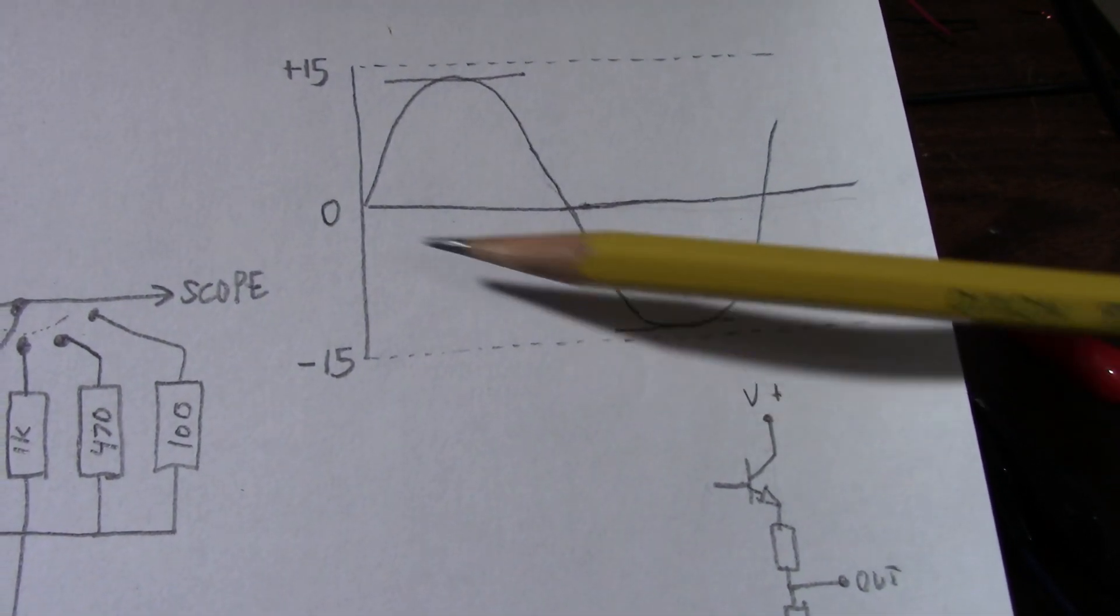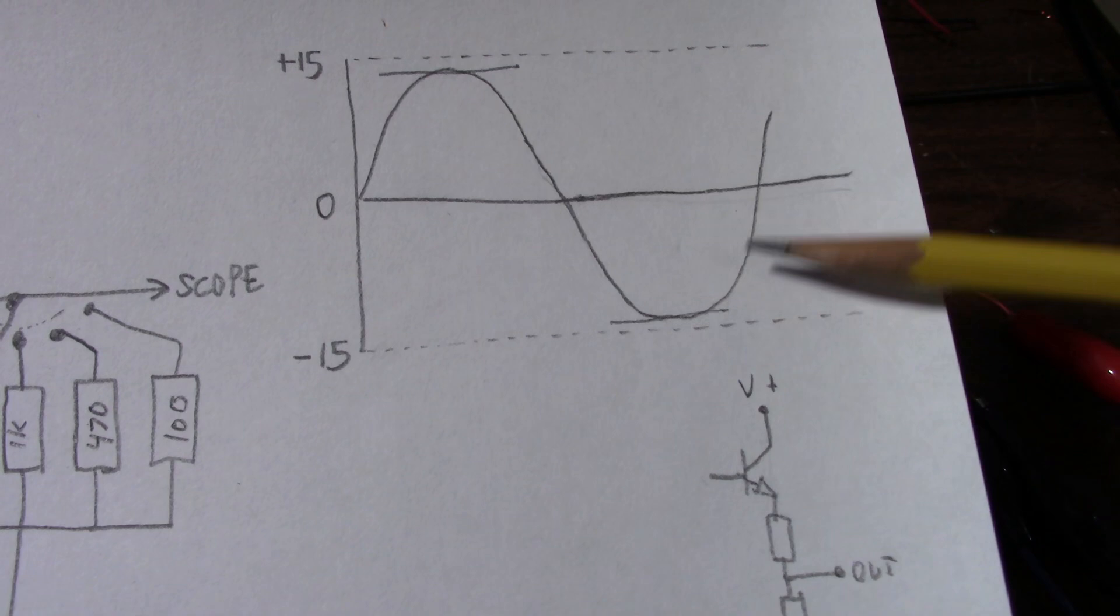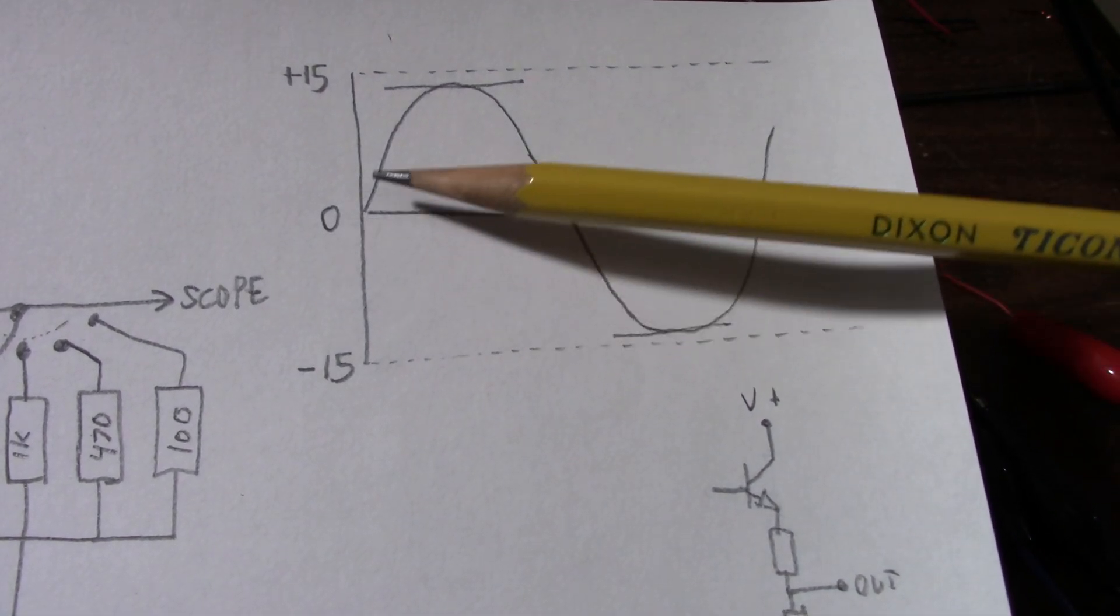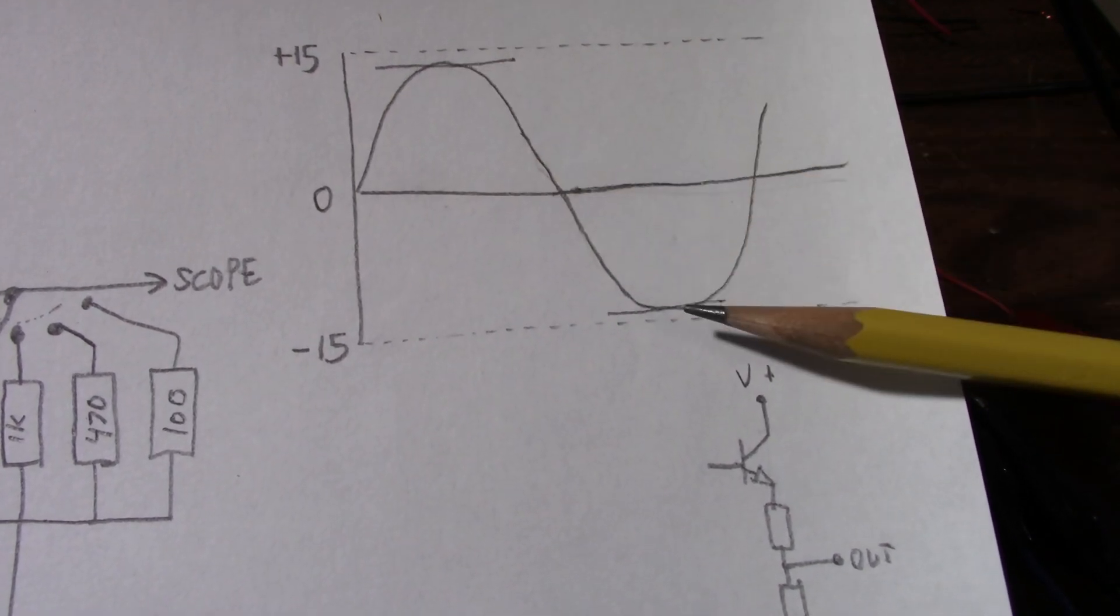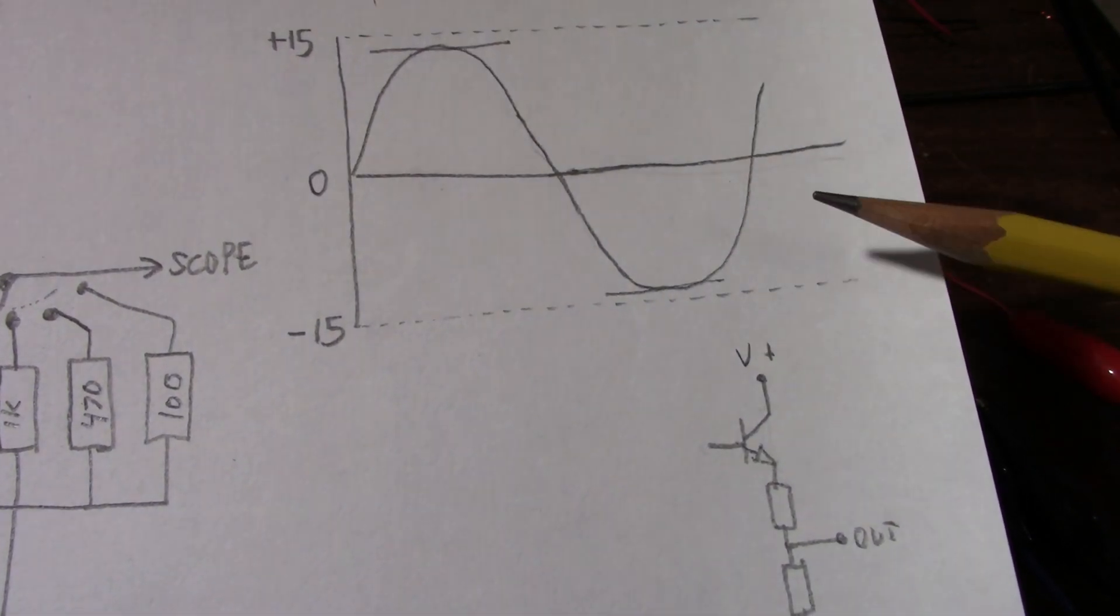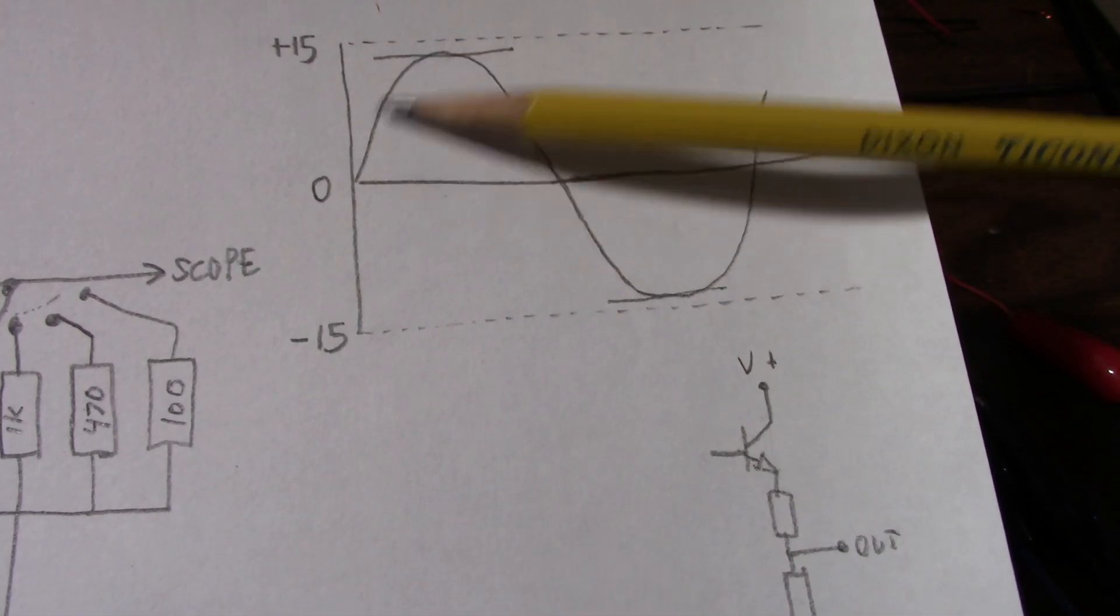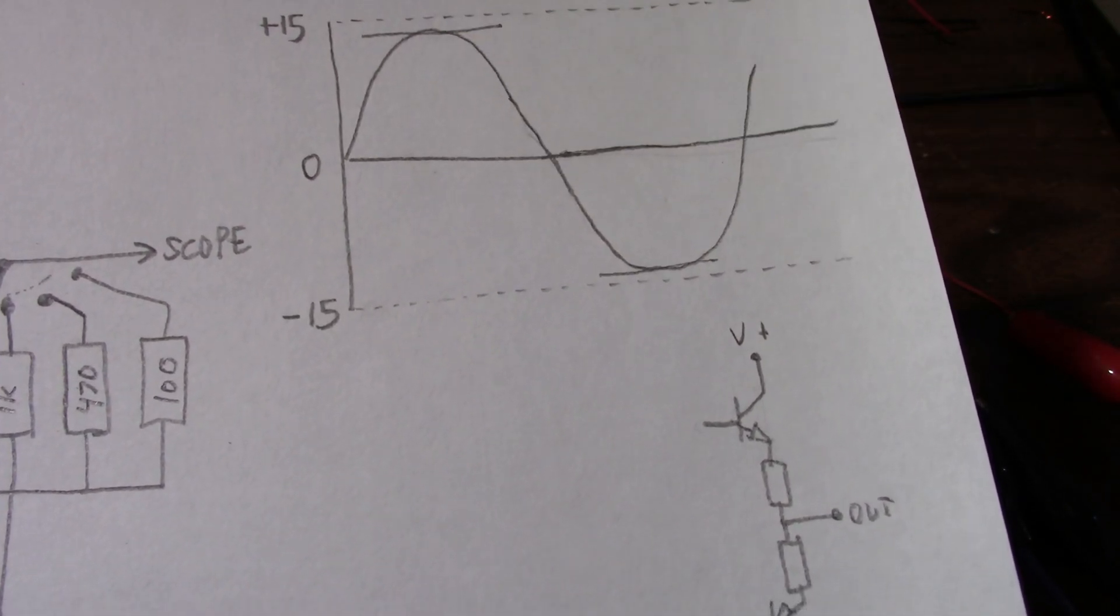And that's the maximum output voltage peak before clipping. So why is this important? Well, depends on the use of the amplifier. If you put too much load on the amplifier, it will hinder this output swing capability.